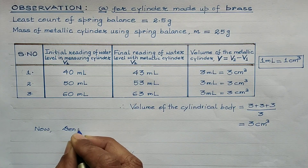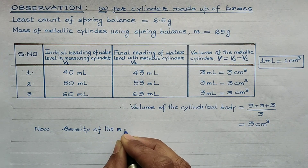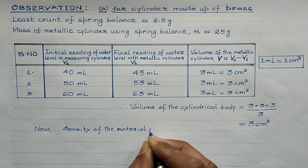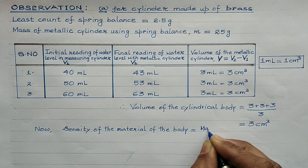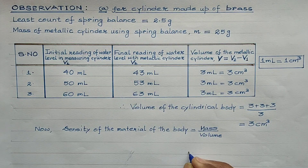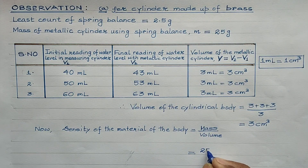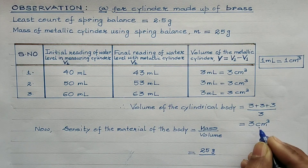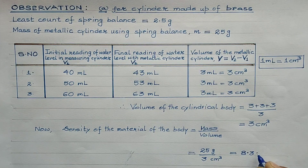Density of a body is defined as mass per unit volume. Let's find out the density of this cylinder made up of brass. Density of brass equals mass divided by volume. Mass measured from the spring balance is 25 grams and volume is 3 cm³. So density equals 25 / 3, which is approximately 8.33 grams per centimeter cube. That is the density of the material of the cylindrical brass body.